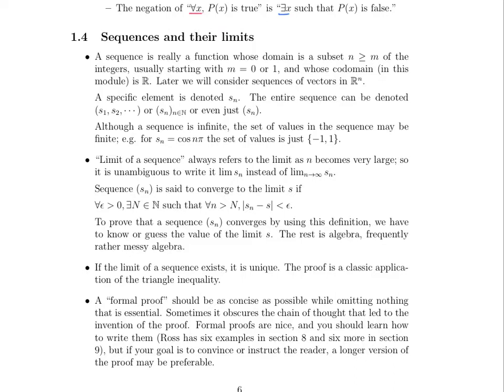But usually we basically just start with 0 or 1 and n starts at 1 and goes to 2, 3, 4, 5, 6, 7. And whose codomain in this module is in R. So basically n is like an index number starting at 0 or 1. And then the output is just a number.